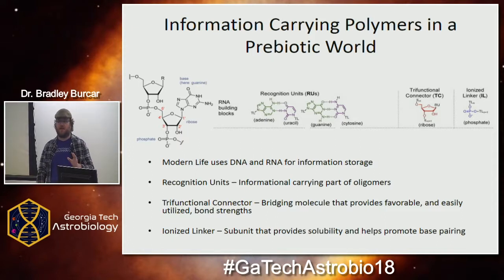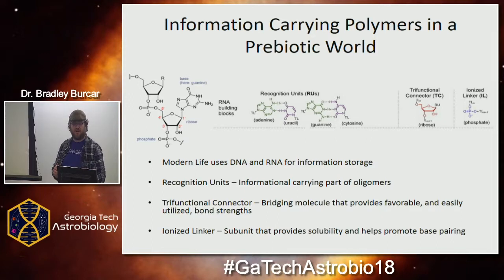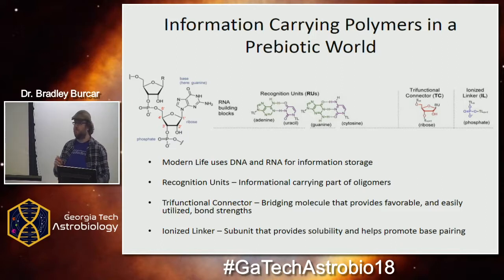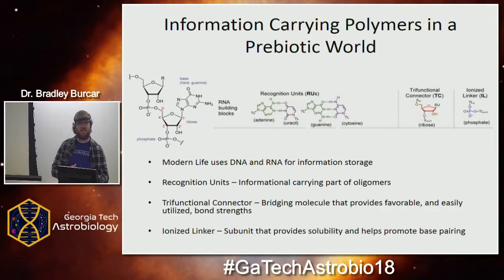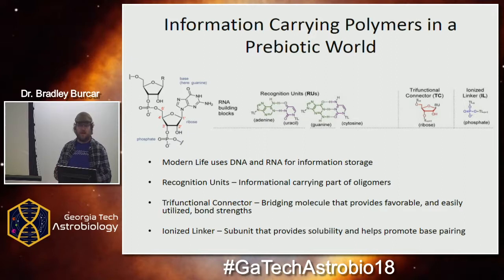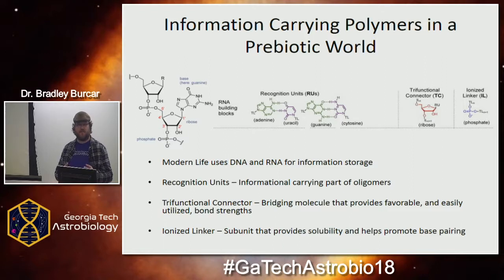So while the RNA world looks really good and probably existed at some time, we don't believe that that was the very first form of life that existed on this planet. We believe that there was something that preceded it, and we use clues from RNA and DNA to figure out what could have preceded that. One of the ways we do that is we look at modern RNA and DNA and break it down into its three central components. You have the recognition units — the bases that it uses to store the information, and also what can do the base pairing in solution.